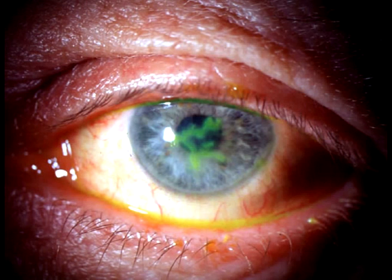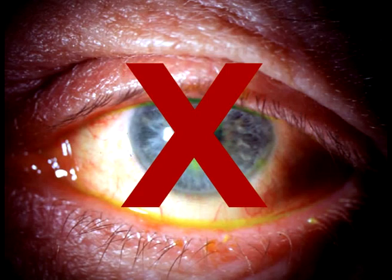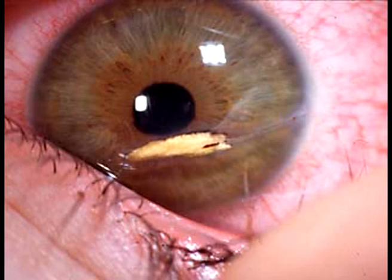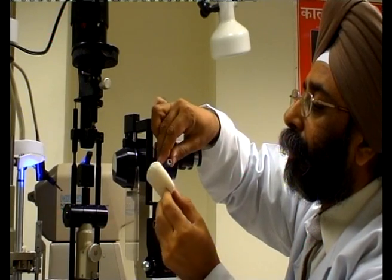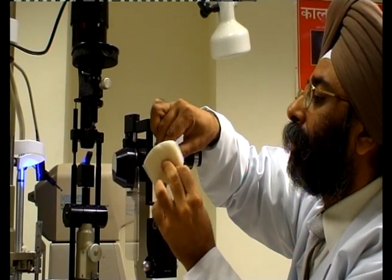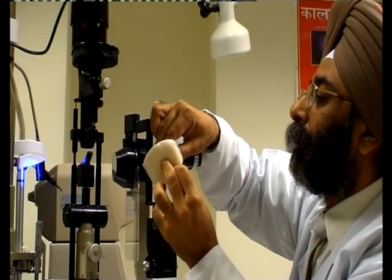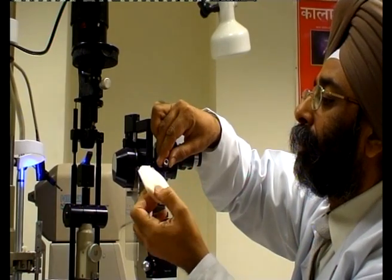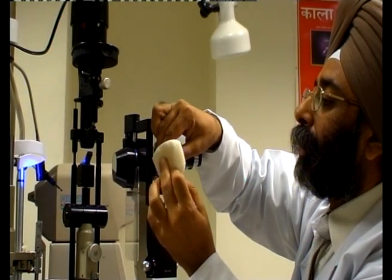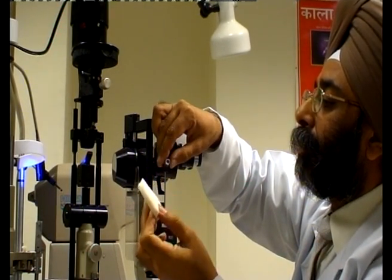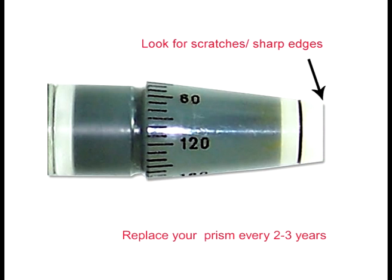Certain precautions need to be considered before undertaking the procedure. Contact tonometry should be avoided in infected or injured eyes. Remember to clean the tonometer between two cases and disinfect the prism after a day's use. Remove the chemical thoroughly after disinfection or cleaning. One should verify the prism for scratches and sharp edges when the day starts, and replace the prism every 2 to 3 years.